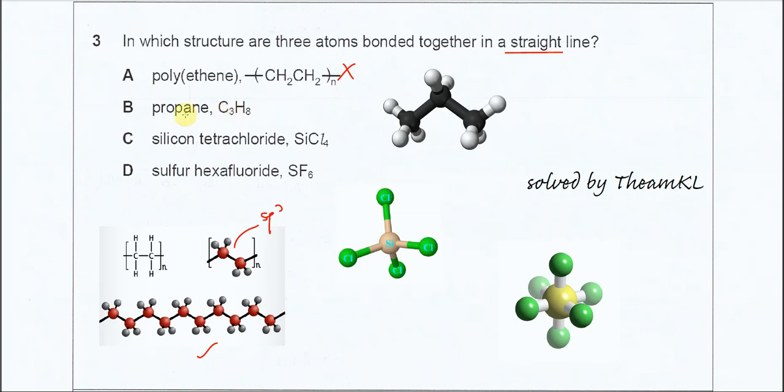For B, propane. The structure is something like this. We know that all carbons are sp3 hybridized and have tetrahedral geometry. So no three atoms in a straight line for this molecule.